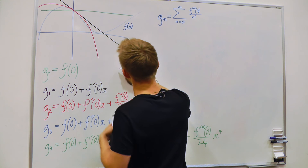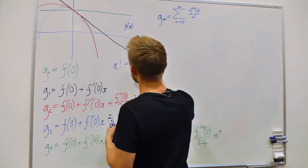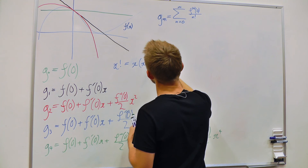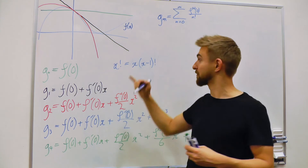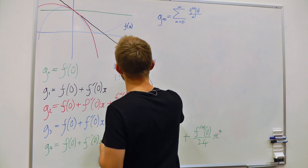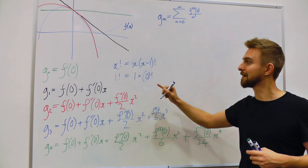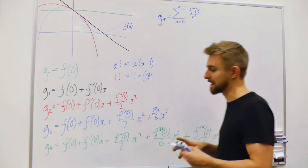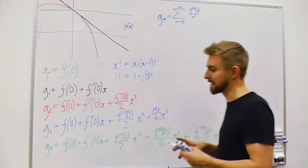One thing to bear in mind is that 0 factorial is just 1. We can see this by defining the factorial function as x factorial equals x times (x−1) factorial — for example, 7 factorial equals 7 times 6 factorial. If 1 factorial equals 1 times 0 factorial, and 1 factorial is clearly 1, then 0 factorial must also be 1. So we have our general expression with x to the power of n at each term, and this is what we call our Maclaurin series.